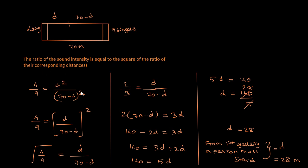So d squared divided by (70 minus d) squared. The number of singers gives the sound intensity ratio 4 by 9. So 4 by 9 equals d squared divided by (70 minus d) squared. This is the concept — a simple way to get the answer.